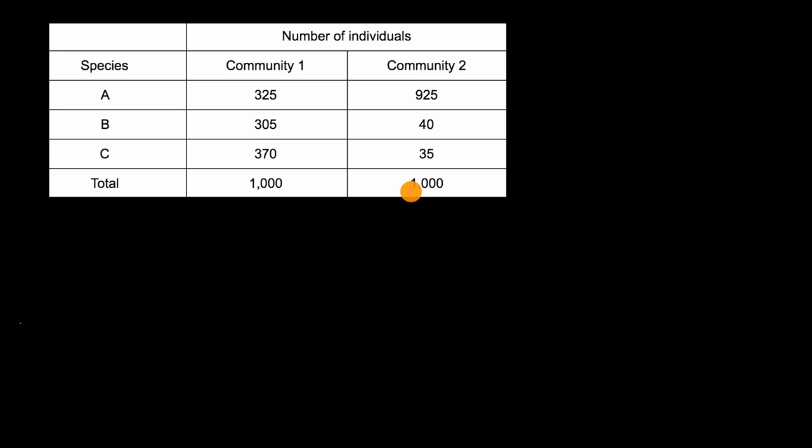Now my question to you, just intuitively, based on the data in this table, which community would you say is more diverse and why? Community one or community two?